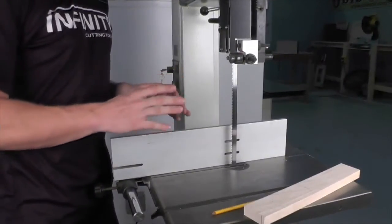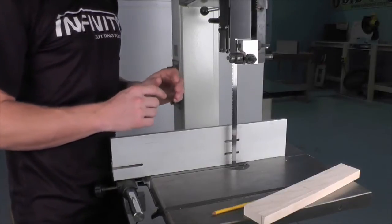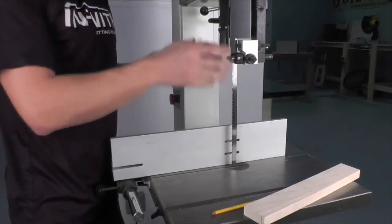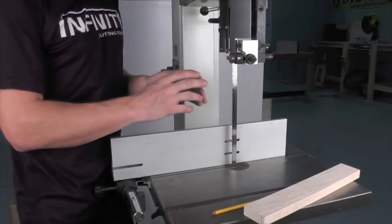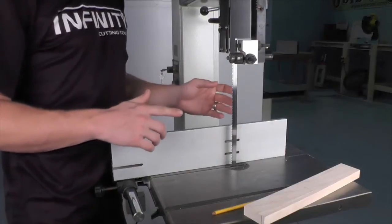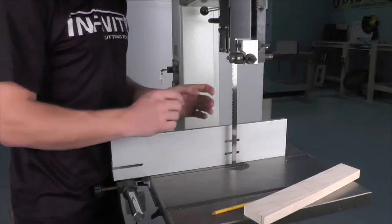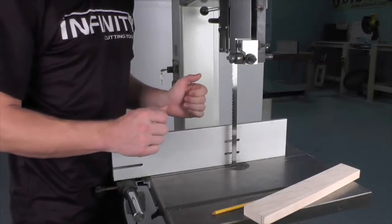The first thing I want to do whenever I install a new blade is make sure I have the blade properly tensioned. I'm going to move my guides up and out of the way so they're not interfering with the blade. I'm going to tension the blade until I can push on the side of the blade and get about a quarter inch of give with light to moderate pressure.